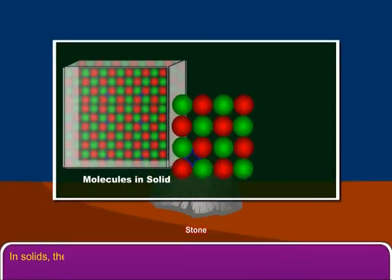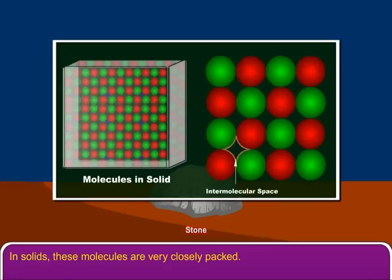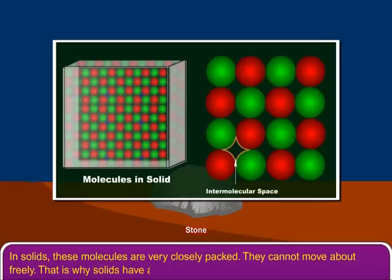In solids, these molecules are very closely packed. They cannot move about freely. That is why solids have a definite shape.